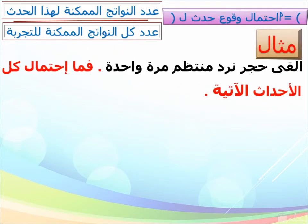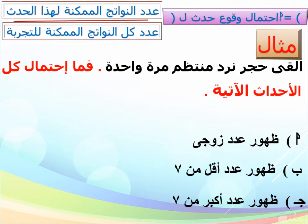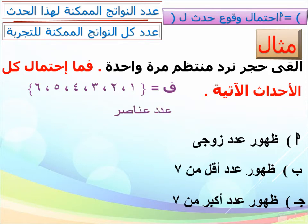احتمال وقوع حدث (أ) = عدد النواتج الممكنة لهذا الحدث على عدد كل النواتج الممكنة للتجربة. المثال: إلقاء حجر نرد منتظم مرة واحدة. فضاء العينة Ω = {1، 2، 3، 4، 5، 6} وعدد عناصر فضاء العينة = 6.